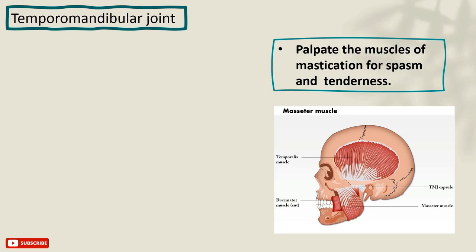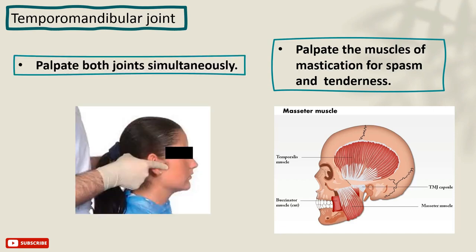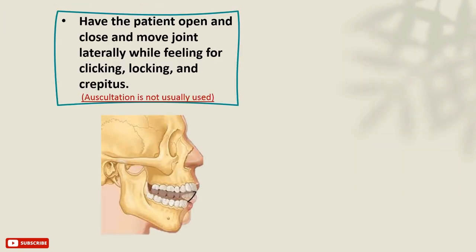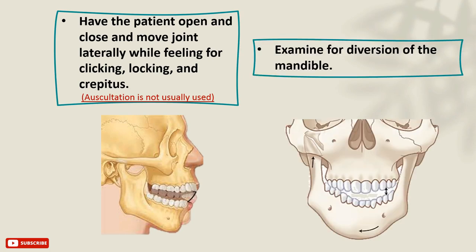Examination of the temporomandibular joint. Start by palpating the muscles of mastication for any spasm and tenderness. Also palpate both joints simultaneously for tenderness while the patient opens and closes. Have the patient open and close several times and move the joints laterally while feeling for any clicking, locking, or crepitus. Auscultation using a stethoscope is not usually used anymore. Examine for any deviation of the mandible while the patient opens or closes.